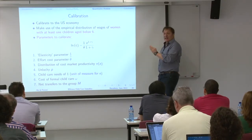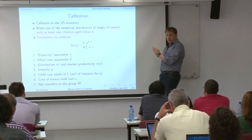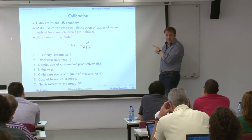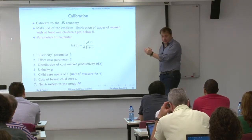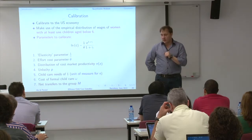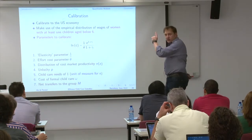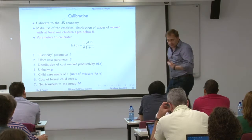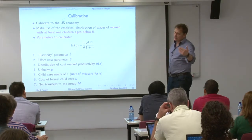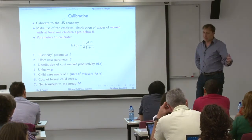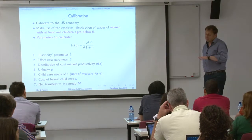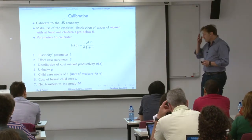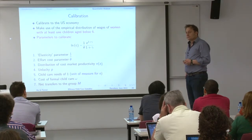Speculating about the third-best: the mechanism of targeting the top type is true here even if the tax is zero at the top. If there are positive taxes, it would be even more reasonable to target those people. So certain qualitative characteristics — not the numbers — could be similar in the third-best. It could be that you end up subsidizing high-income people more than in the second-best.